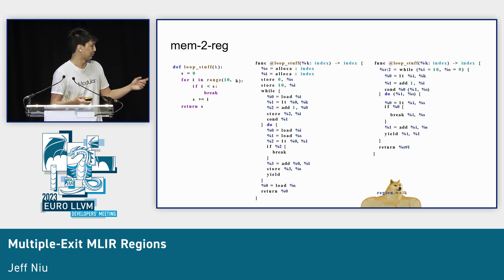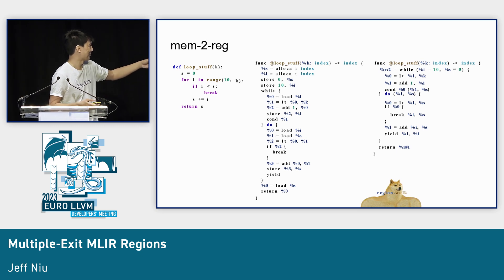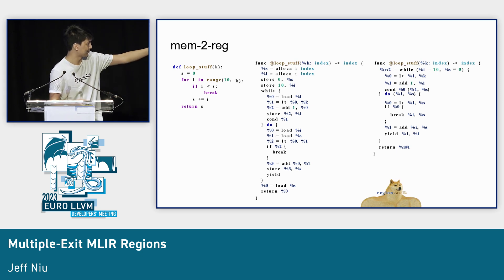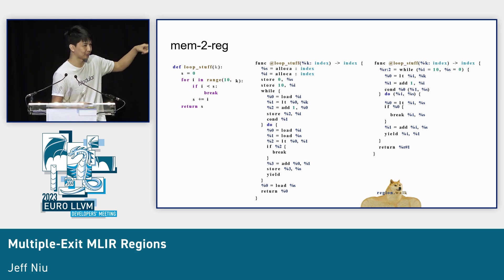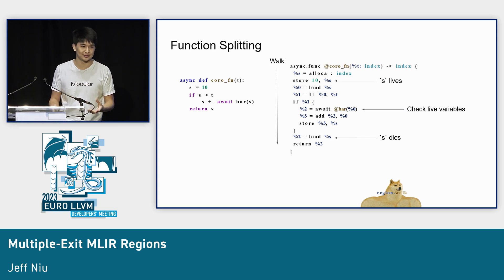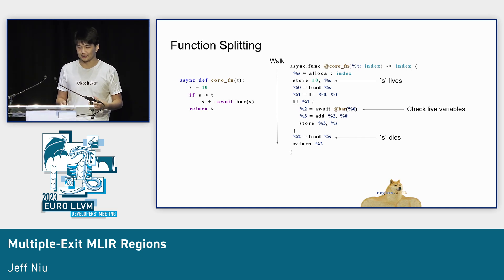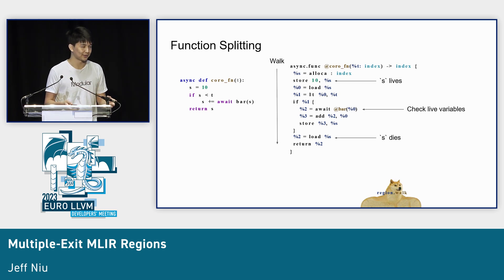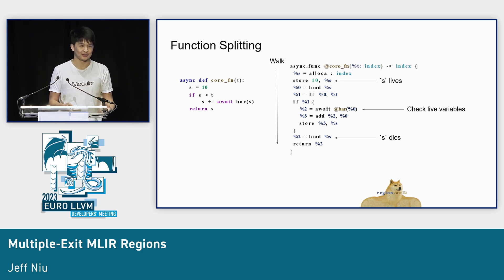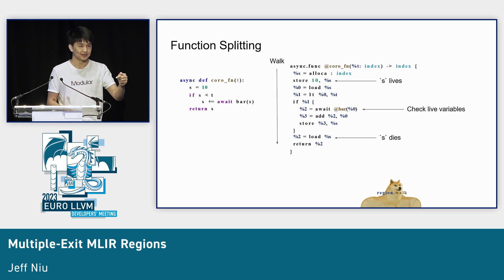Now we can write the exact same algorithm on loops with breaks inside ifs, with continues, and all these constructs. In a hypothetical Python-like language with a for loop and an if-break, when we perform SSA formation the break itself has a variadic set of operands that transfer values to the return of the while loop two levels up. A more interesting example is function splitting, which is part of coroutine formation — an implementation of async functions. You walk the IR from the top of the function, keep a set of live variables, and each time you find a suspension point those live variables get spilled onto the coroutine frame.